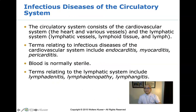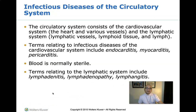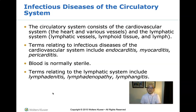Let us talk about infectious diseases of the circulatory system. The circulatory system consists of the cardiovascular system — the heart and various vessels — and the lymphatic system — including lymphatic vessels, lymphoid tissue, and lymphatic fluid. Terms relating to infectious diseases of the cardiovascular system include endocarditis, myocarditis, and pericarditis. Endocarditis is the inflammation of the heart's inner lining — the endocardium — and is usually caused by bacteria.